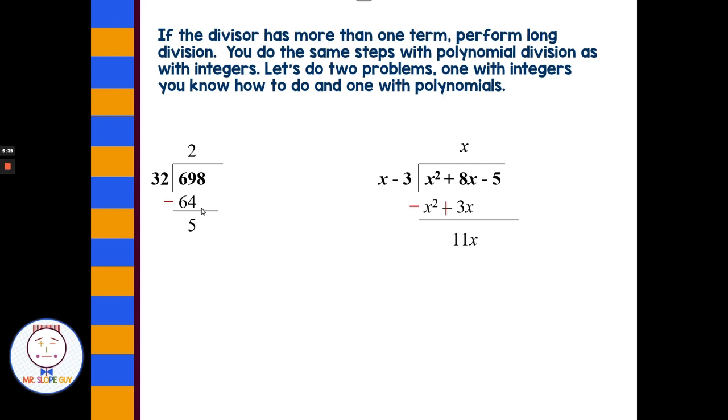Then I'm going to bring down the 8 on this side, and bring down the minus 5 on this side. Then, what times 32 is 58? Well, it only goes in there one time. And what times x would give me 11x? That would be positive 11. So I put 1 on this side, and plus 11 over here. 1 times 32 is 32. Over here, 11 times x is 11x, and 11 times negative 3 is negative 33.